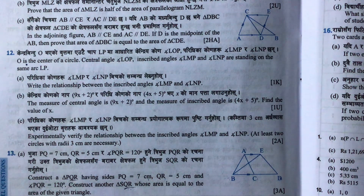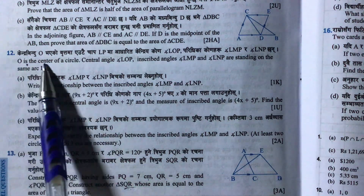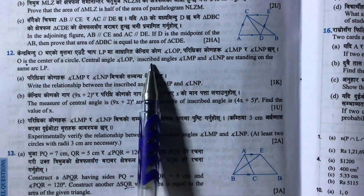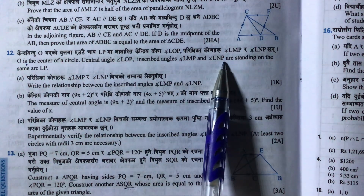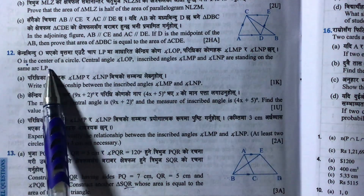Dear students, today I am going to teach you one question related to the SEE model question issued by CDC. This is question number 12. The question is: O is the center of the circle, central angle LOP, inscribed angles LMP and LNP are standing on the same arc LP. This is given to us.